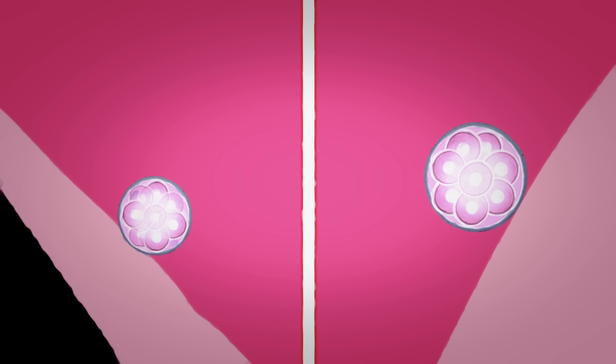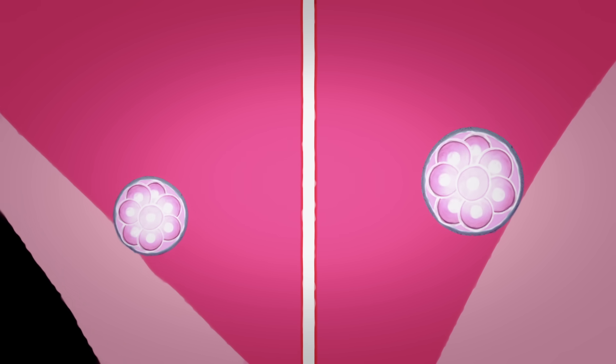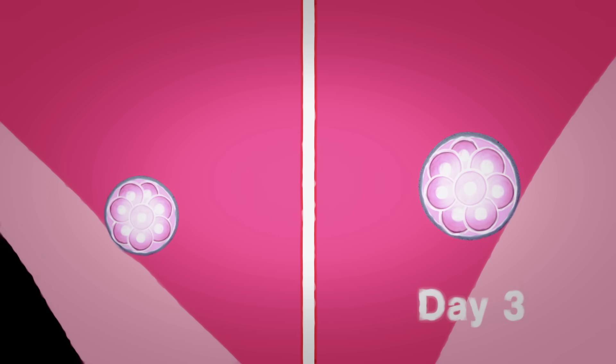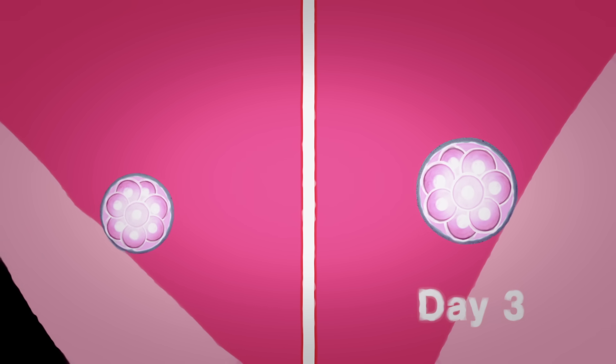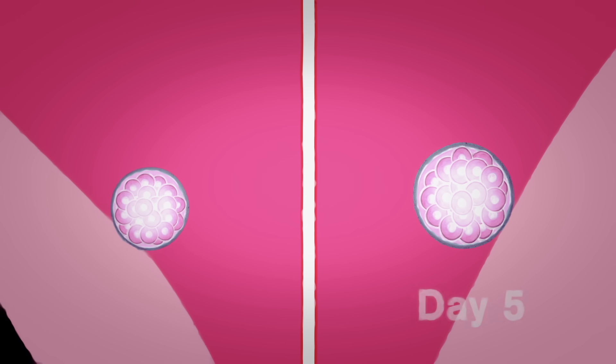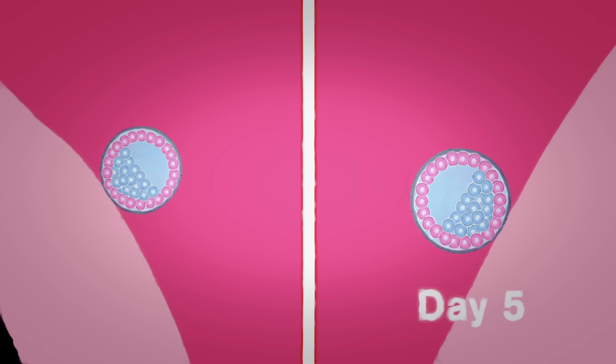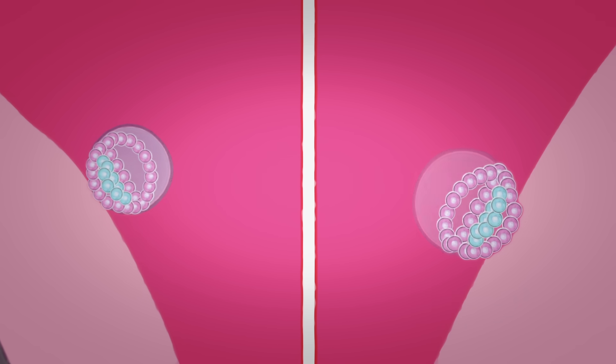Common convention is to transfer the embryo three days after fertilization, when the embryo has eight cells, or on day five, when the embryo is called a blastocyst and has hundreds of cells.